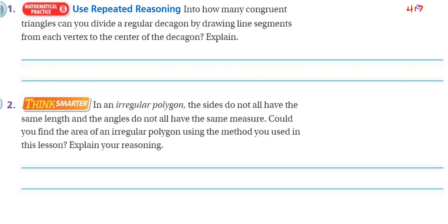All right, now I'm on the bottom of page 412 of the GoMath textbook. Let's take a look. Use repeated reasoning. Into how many congruent triangles can you divide a regular decagon by drawing line segments from each vertex to the center of the decagon? Explain.